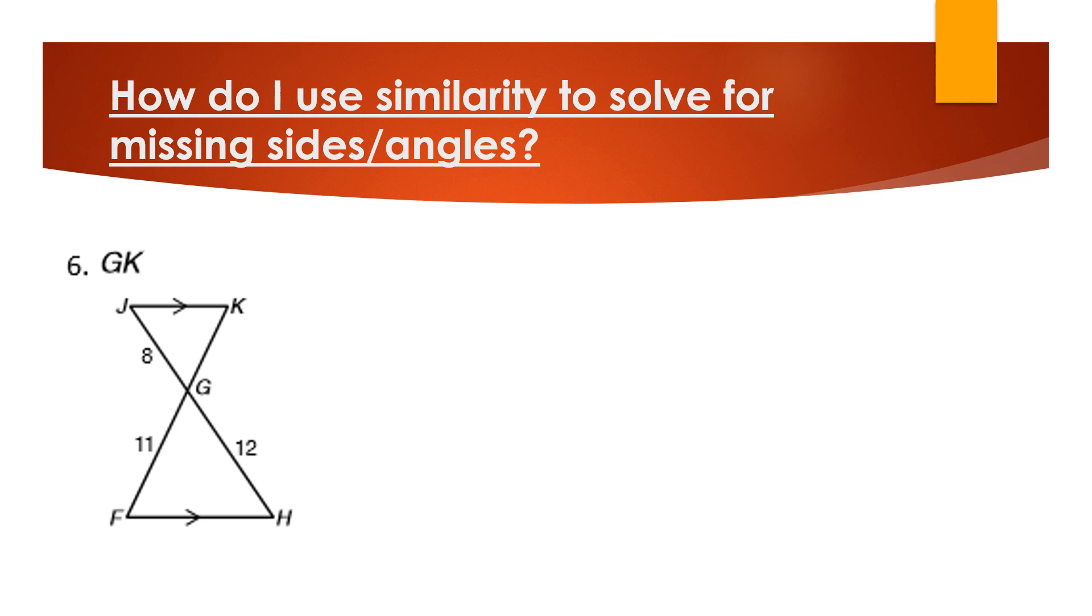So we've got our last one here. We're looking for GK. We've got to see which sides are proportional to one another. So as we can see here, we have GK and FH are parallel, so we should automatically know about alternate interior angles. So that's how we're going to find which angles are congruent to one another, therefore getting what sides are going to be proportional to one another.